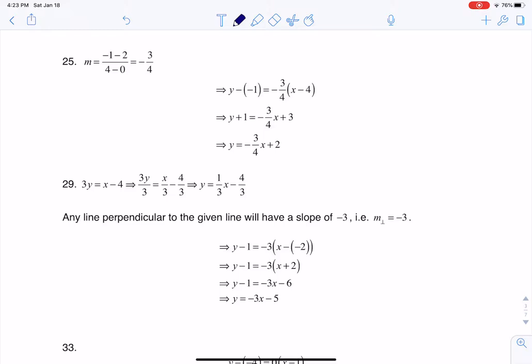Hey Math 31, I had a question coming out of section 2.2, number 25. This problem said to find the equation of a line using the point-slope formula, but then write your final answer in slope-intercept form.